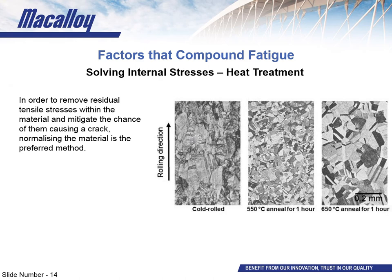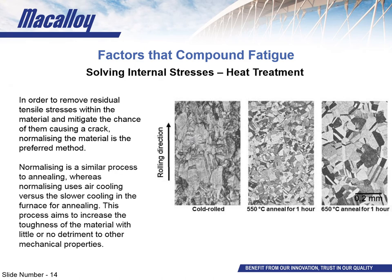The most common method of removing residual stresses for tension rods is to normalize the material. Normalizing is similar to annealing — the material is taken up to a predetermined temperature and soaked there for a predetermined length of time — but normalized materials are then air cooled to ambient temperatures instead of cooling slowly in the furnace as in annealing. During normalizing, all the grains are allowed to form to a consistent size and shape, and that homogeneity is retained through the gradual cooling process. Normalizing is generally performed to increase toughness — the material's resistance to cracking — which in turn improves its fatigue resistance.